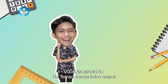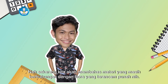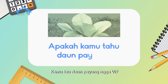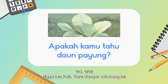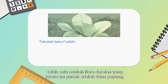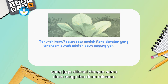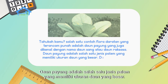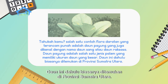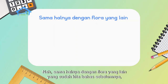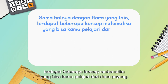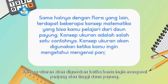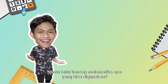Hello Grade 4 friends, we're back together. Are you still enthusiastic? Now we will discuss material still related to endangered flora. Do you know the daun payung? I don't know, Kak, I'm hearing it for the first time. One example of endangered land flora is the daun payung, also known as daun sang or daun raksasa. It is a type of palm with very large leaves, formerly found in North Sumatra Province. There are several mathematical concepts that can be learned from the daun payung. The concept of measurement is used when you want to know the length or height of the daun payung.